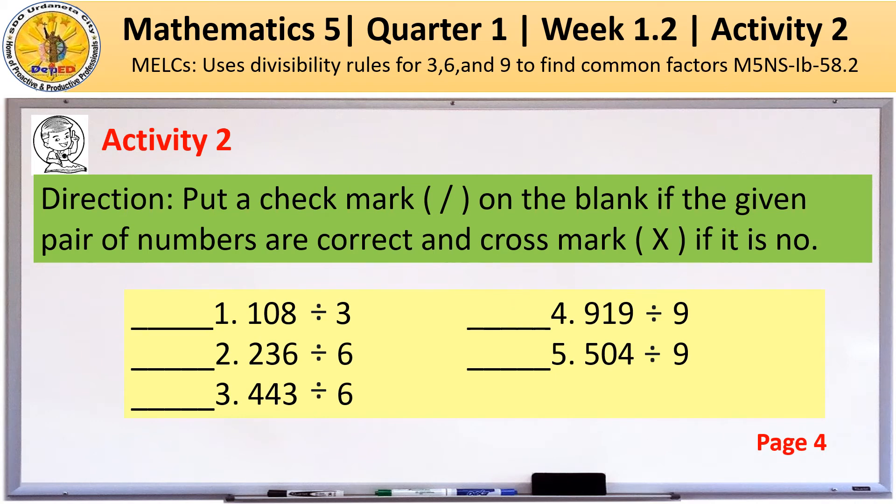Let's proceed to Activity 2 on page 4. The direction is, put a check mark on the blank if the given pair of numbers are correct and cross mark if it is no. So, we have number 1. What will be the answer? The answer is cross mark.